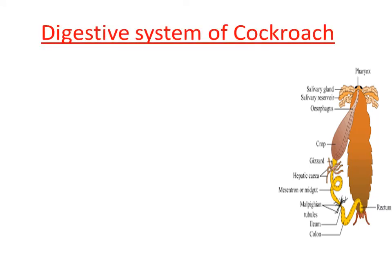The digestive system is formed by different organs whose main function is digestion and absorption of food. The cockroach has a complete digestive system — meaning it has two openings: one opening towards the anterior region and another opening towards the posterior region. Because it consists of two openings, it is called a complete digestive system. The digestive system is also called the alimentary canal or gut.